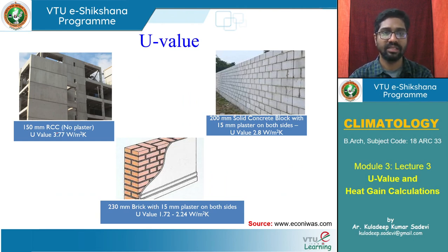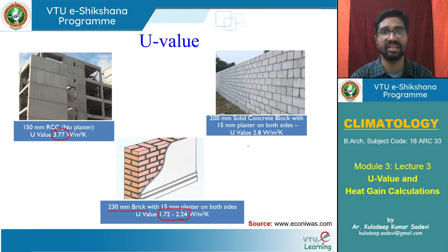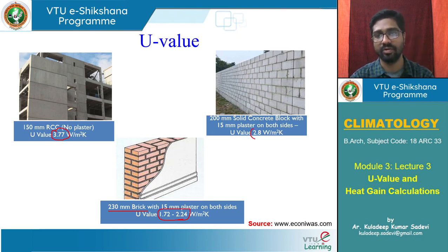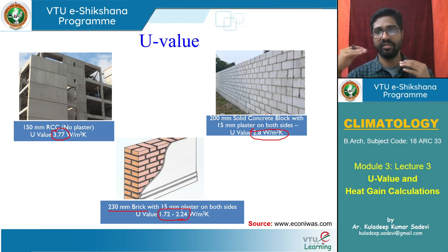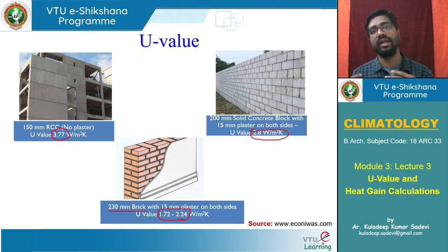For comparison: 150 mm RCC has 3.77 W/m²·K; a 9-inch brick wall is 1.72–2.24 W/m²·K depending on density and manufacturing process; solid concrete blocks are about 2.8 W/m²·K. So the range goes from about 3.7 for concrete, to 2.5–2.8 for normal brick or cement bricks, and AAC blocks are in the range of 0.8–0.9 W/m²·K.